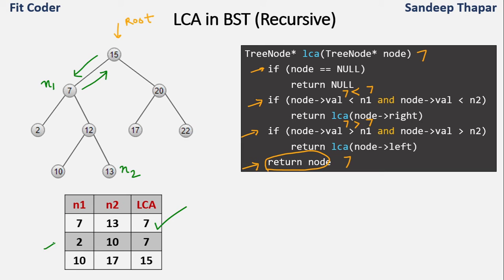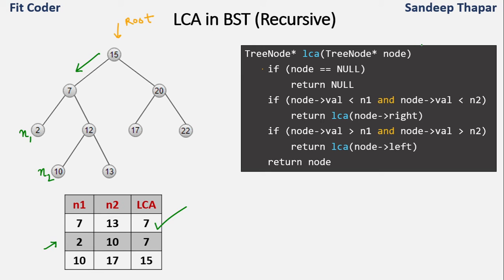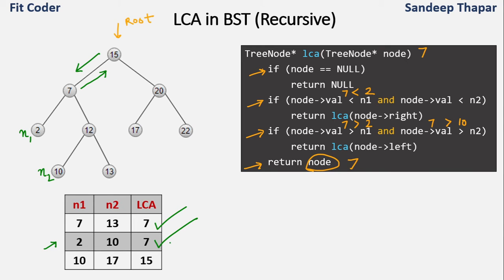In the second example, N1 is 2 and N2 is 10. The first call is for root node 15. We check if 15 is less than 2 — false. We check if 15 is greater than both 2 and 10 — true, so we call LCA for node 7. At node 7, we check if 7 is less than 2 — false. We check if 7 is greater than both 2 and 10: 7 is greater than 2 but not 10, so the condition is false. We return node 7. The LCA of 2 and 10 is node 7.